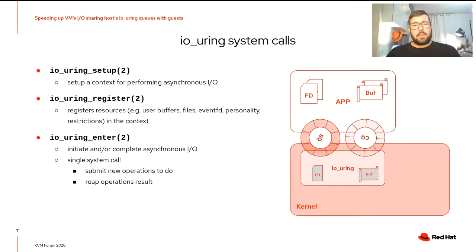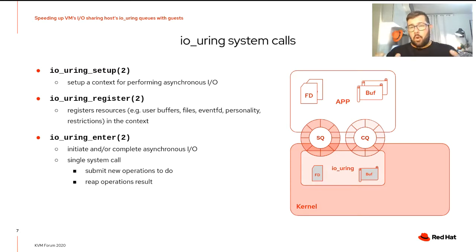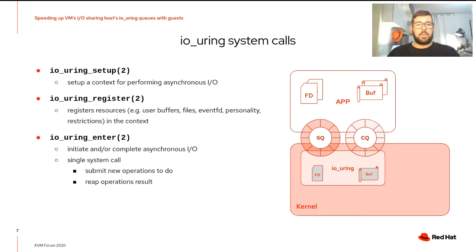The last system call is IOUring enter. It's the most used system call during the lifecycle of the context, because it's used to initiate and/or complete asynchronous I/O. So with a single system call, we can submit new operations to do and reap operations done, using the rings that we'll see in the next slides.